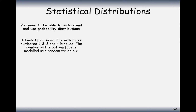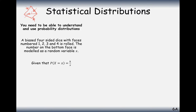A biased four-sided dice with faces 1, 2, 3 and 4 — the number on the bottom face is modelled as the variable X. Imagine a tetrahedron with a flat base; it has one face on each side and one underneath, numbered 1, 2, 3 and 4. Whenever it lands, the number on the bottom is our random variable. The probabilities are given by the function: P(X = x) = k over x, where x is the outcome value 1, 2, 3, or 4, and k is a proportionality constant we need to find.